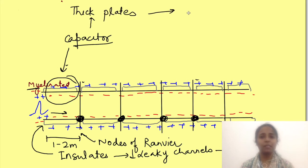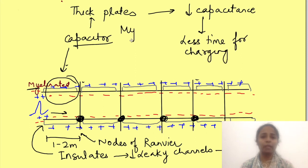Thicker the capacitor plates less is the capacitance and it takes lesser time to change the potential. So since myelination makes the membrane thicker it actually decreases the capacitance. Thus potential changes are faster. In fact it is so fast that it appears that potential change just sweeps at the site of myelination.